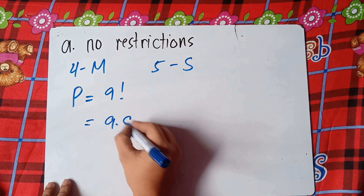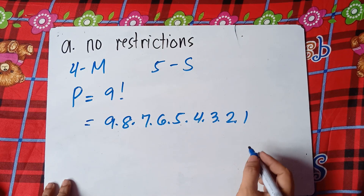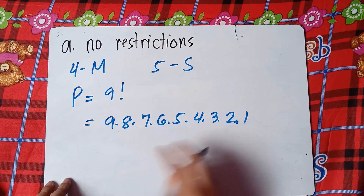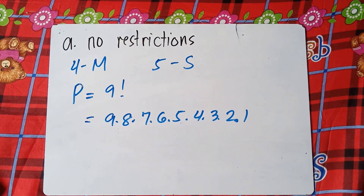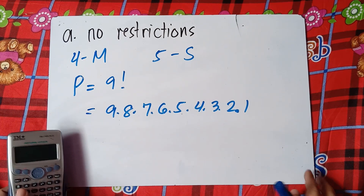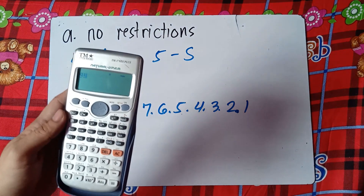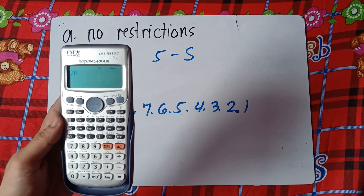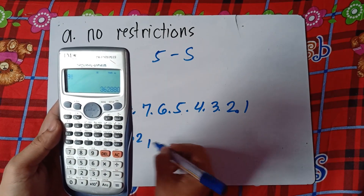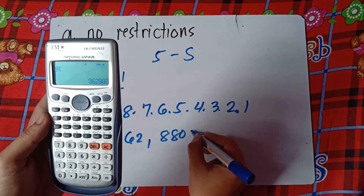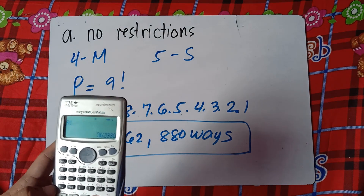Nine factorial means nine times eight times seven times six times five times four times three times two times one. It's very hard to multiply those numbers manually, so we just use the calculator. So nine, then shift factorial — nine factorial is 362,880 ways. That's how you solve for the first question.